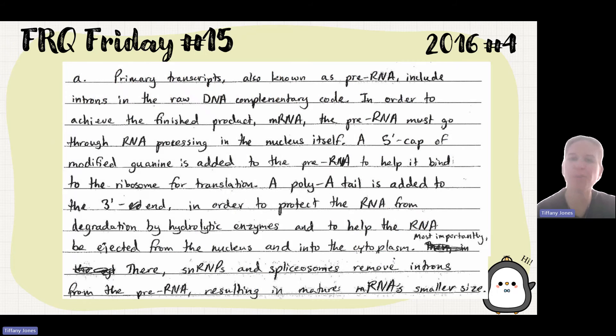So the student says, primary transcript, also known as pre-mRNA, includes the introns in the raw DNA complementary code. In order to achieve the finished product, mRNA, the pre-mRNA must go through RNA processing in the nucleus itself.